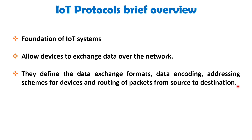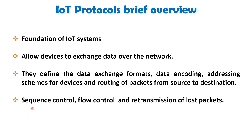These protocols also encompass additional functions that contribute to the overall effectiveness of data transmission. Sequence control is one such function, which aids in maintaining the order of packets and identifying any lost packets during transmission. Flow control is another essential aspect, allowing the sender to regulate the rate at which data is transmitted, preventing overloading of the receiver or the network. IoT protocols also support the retransmission of lost packets, ensuring data integrity and successful delivery.